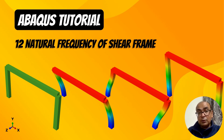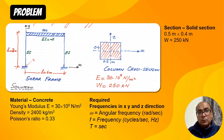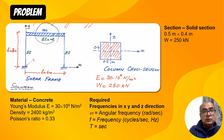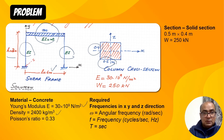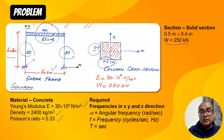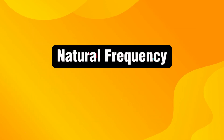In this lecture I will talk about the natural frequency of a shear frame, focusing on three translational modes in the X, Y, and Z directions. The example assumes mass is rigid at the top. The frame height is three meters, length is six meters, the beam is considered very rigid, and the column section is 0.5 by 0.4 meters. Material is concrete with given E, density, and Poisson's ratio. The applied load is 250 kilonewtons, which needs to be converted into mass. We need to find frequencies in X, Y, and Z directions.